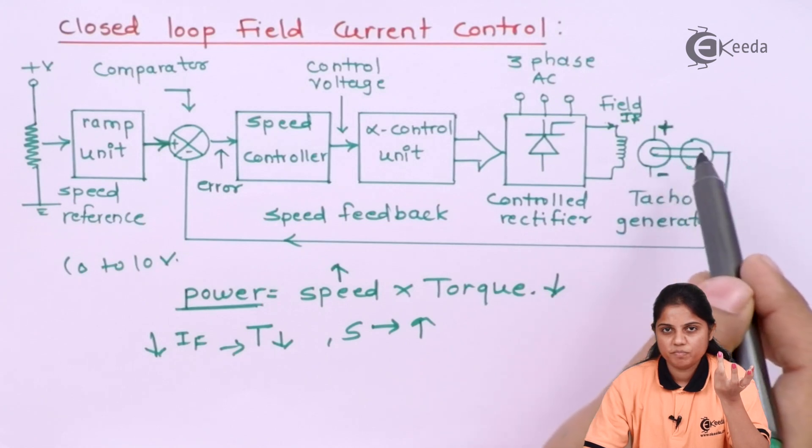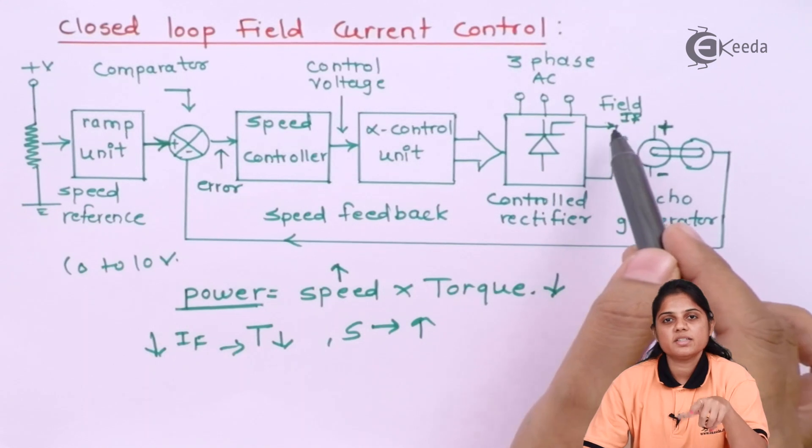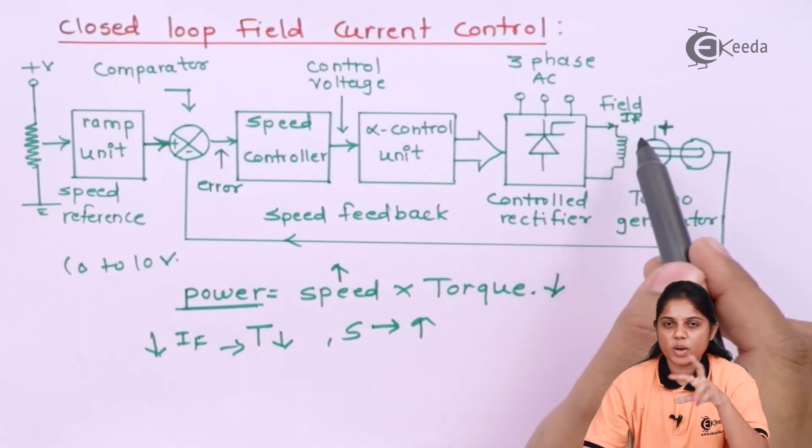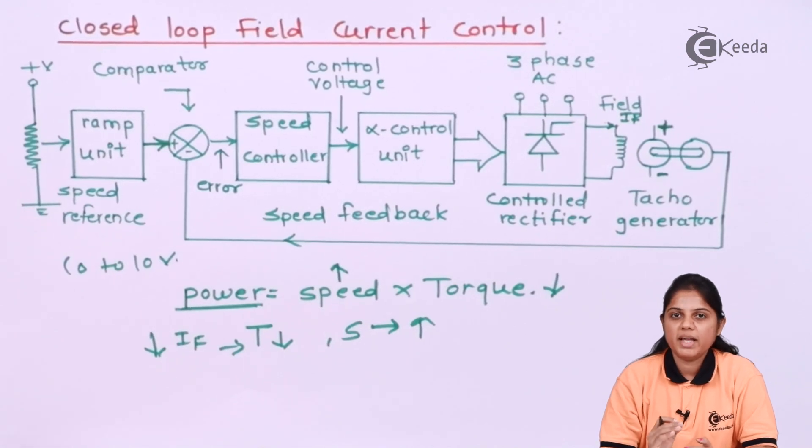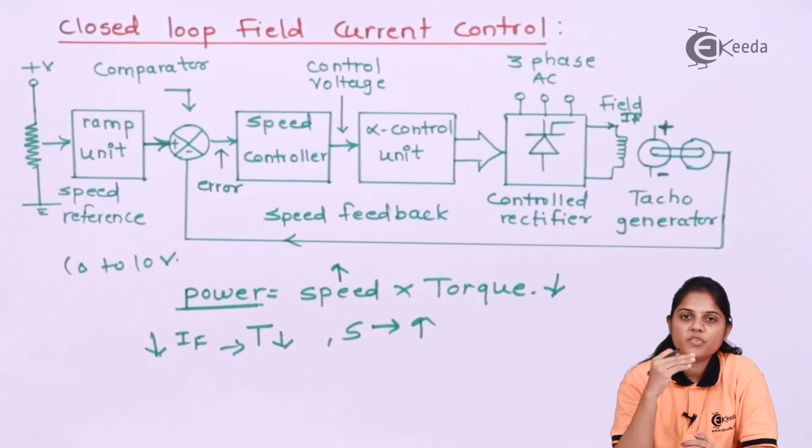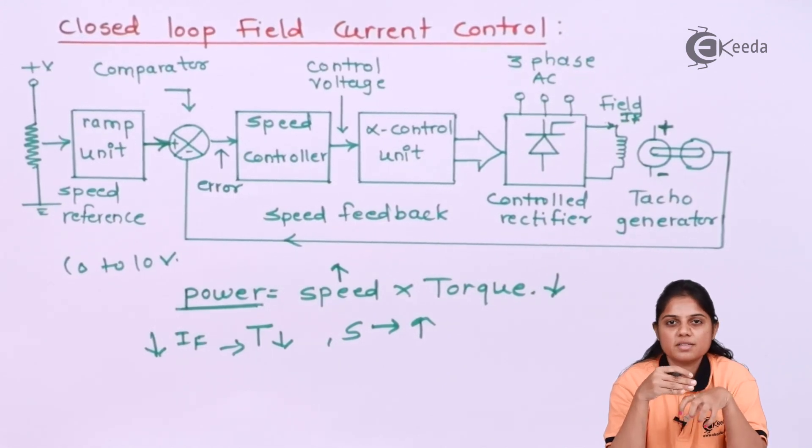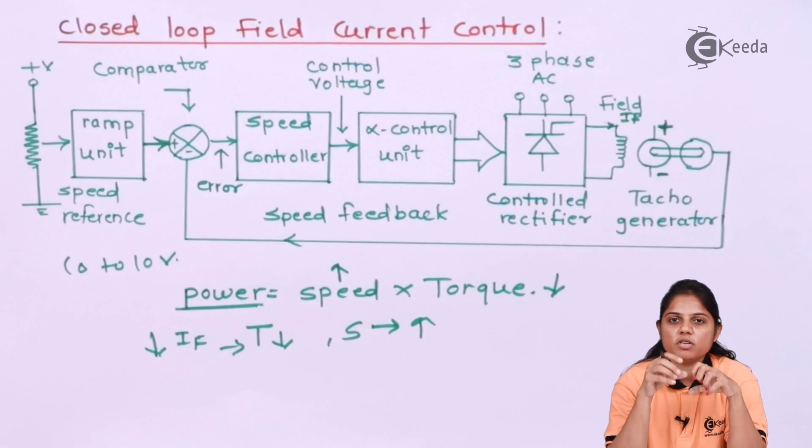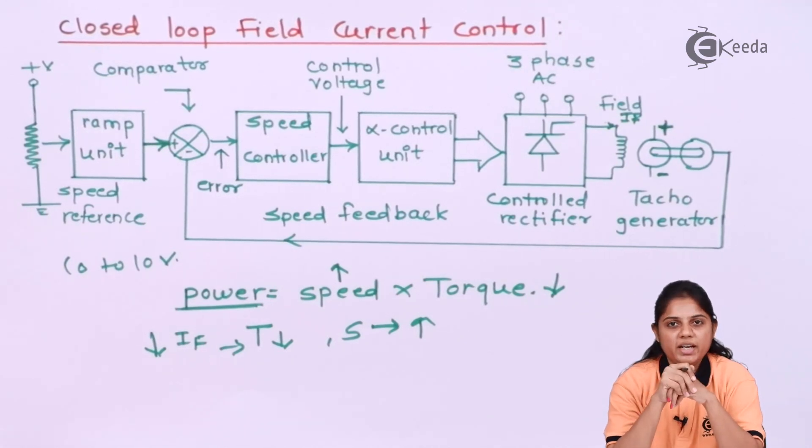If the speed is more than required, then you need to increase the field current. You have to remember this vice versa operation. If your speed is more than required, then you need to increase field current because if you increase field current your speed will decrease. But if you are working at a speed which is less than the required amount, then you have to decrease the field current. If you are decreasing the field current, your speed will automatically increase and you can reach the required level.